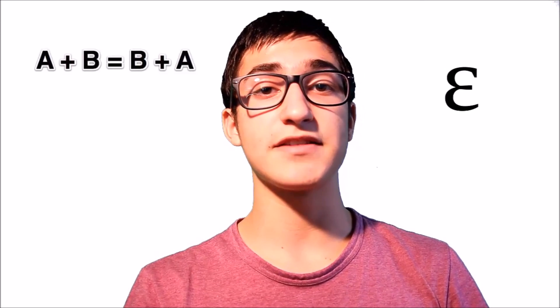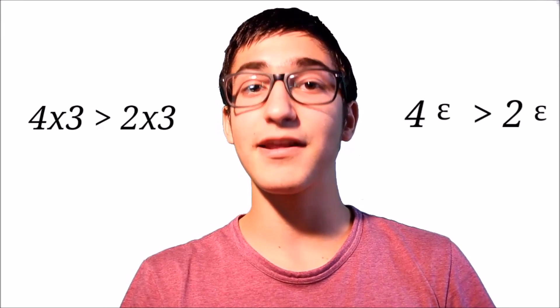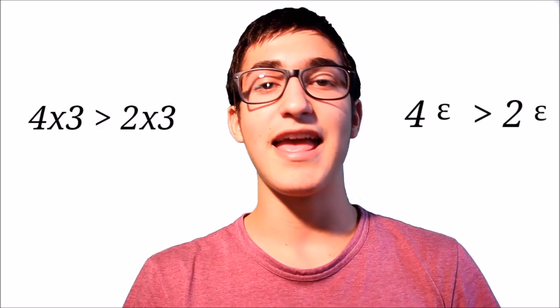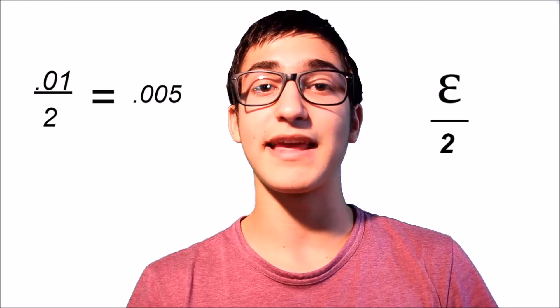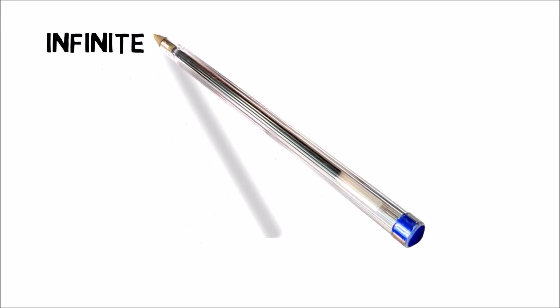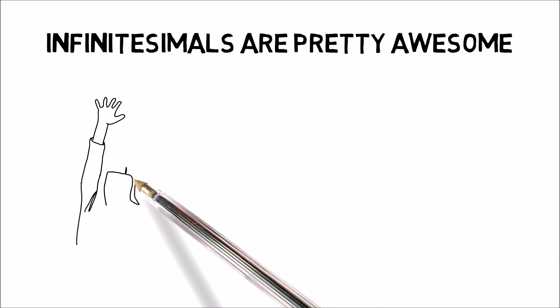And it gets even better. All the laws that govern the real number line also govern the hyperreal number line. Just like I can say a plus b equals b plus a, so too I can say this in terms of infinitesimals, which are symbolized using epsilon. And just like I can say 4 times 3 is greater than 2 times 3, so too I can say 4 times epsilon is greater than 2 times epsilon. And just like I can always divide a number by 2 to get a smaller number, so too I can divide epsilon by 2 to get a smaller infinitesimal. I can say with confidence that infinitesimals are awesome.